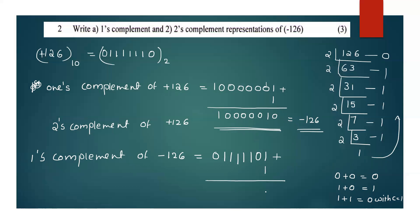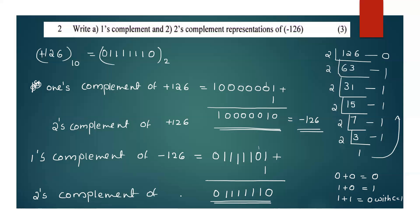In 2's complement, you add 1. 1 plus 1 is 0, carry 1. The next bit is 0, add 1. You don't have to do anything else beyond that. This is 2's complement. This is 2's complement of minus 126.